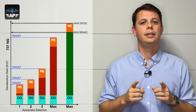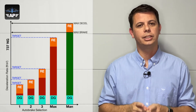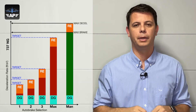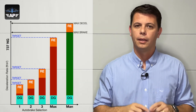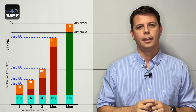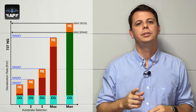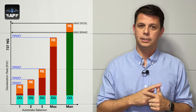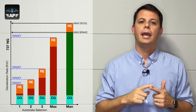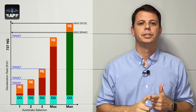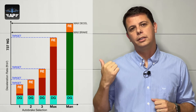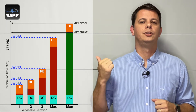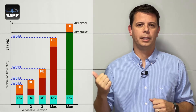Conclusion: no, the thrust reverser does not change the actual landing distance at all if we are using autobrake. It will change if we are not using autobrake and are instead using maximum manual braking. But not quite — I said it depends on two different things: the autobrake system, which I've just explained, and the runway condition. All the data I've shown you so far is from a dry runway condition.